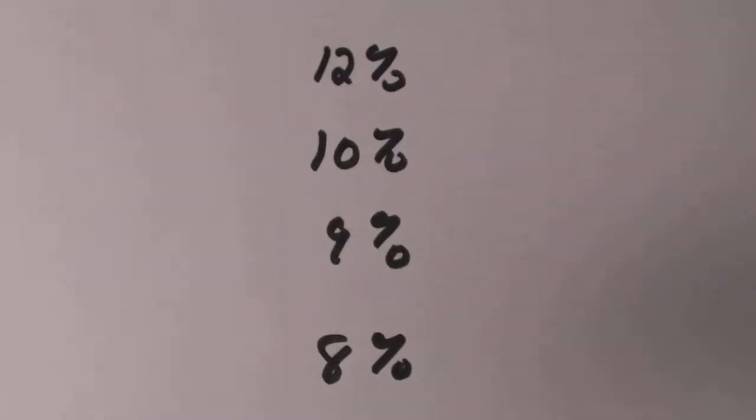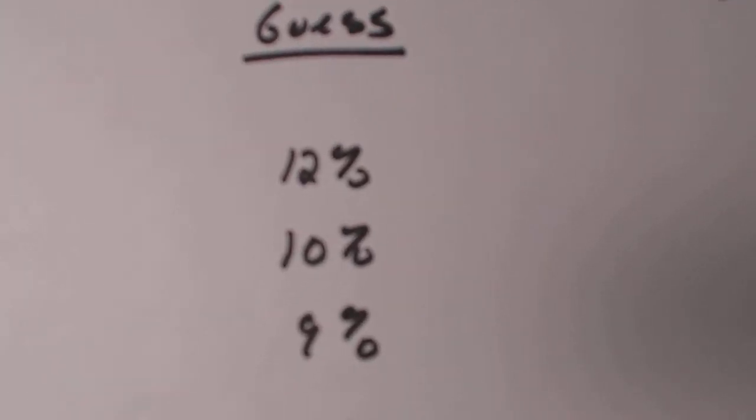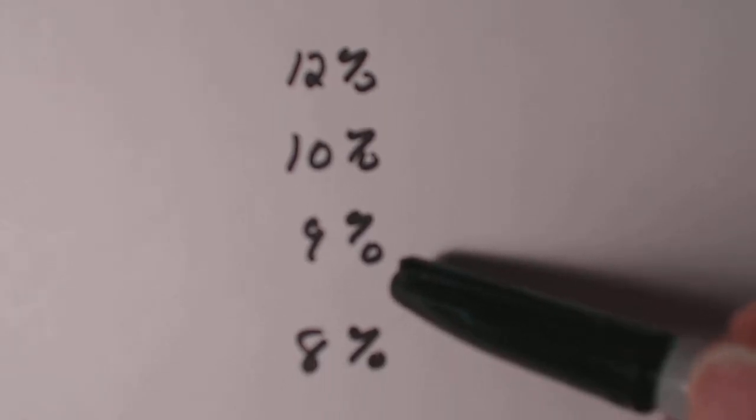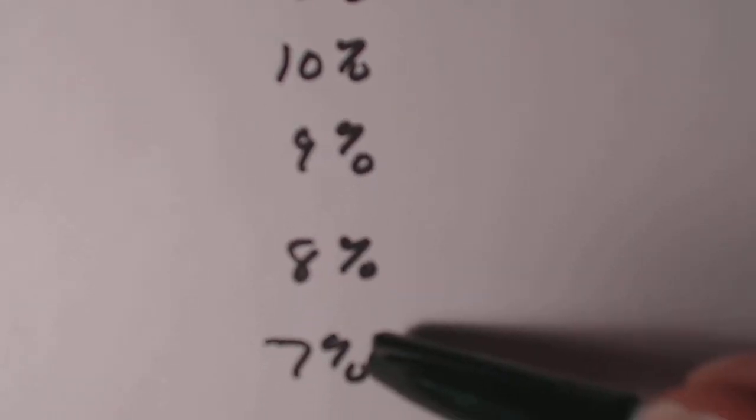And let me show you my little chart that I did. So if you have internal rate guess is 12% good, 10% good, 9% good, 8% good, 7% good.